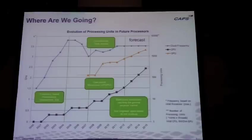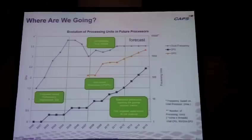The GPU core count is the orange line — at the beginning it was 128, now it's about 512, and that number will keep increasing because you cannot increase the frequency of the processor. So the amount of parallelism you will have is still growing and will be more and more important.